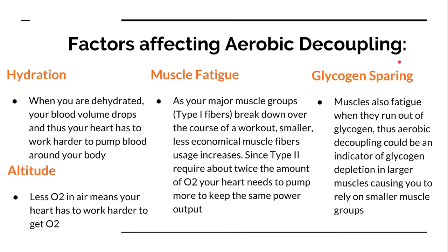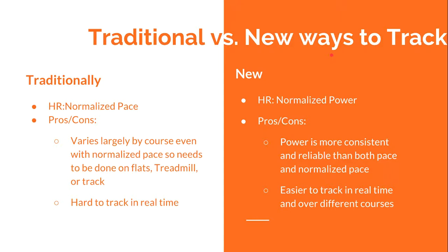Alan Cousins also brings up the point that this fatigue could be from glycogen stores being depleted. Over the course of a race or workout, you're burning glycogen in different ratios. As your muscle fibers lose and burn through their glycogen, they fatigue — forcing type 2 muscles to pick up the slack again, requiring more oxygen and driving heart rate up. So you can use aerobic decoupling as a sign of how much glycogen you have in your muscles.